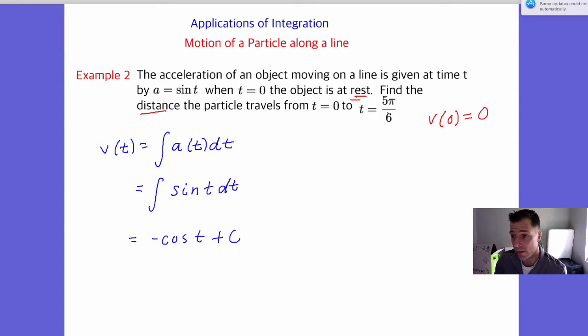So in red, they gave us velocity. They said at zero, the velocity at t equals zero is zero. So we have zero equals negative cosine of zero plus c. Well, we know that at time zero, velocity is zero. So we get zero equals negative one plus c, which means that c equals one.